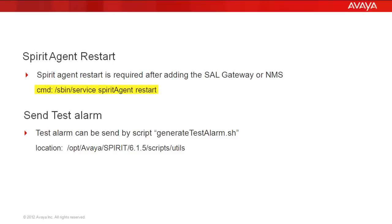We have a command /sbin/service Spirit Agent restart. It will restart the Spirit Agent, and after restarting it, we can check it by sending a test alarm using the script generateTestAlarm.sh. I have mentioned the location here for this script and I am going to demonstrate the same on the server.